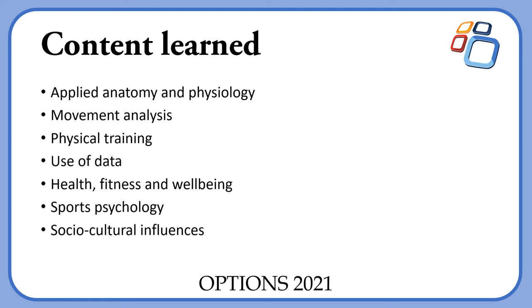Component 1 and Component 2 will allow you to study topics such as Anatomy and Physiology, Movement Analysis, Physical Training, Use of Data, Health, Fitness and Wellbeing, Sports Psychology, and Sociocultural Influences. This means you will study the body — the muscular and skeletal system, the heart and cardiovascular system. You will study how gender and society can impact people's ability to participate in sport, components of fitness, training methods, and how data can be analysed to improve performance. You will cover a variety of topics during your theory-based work.